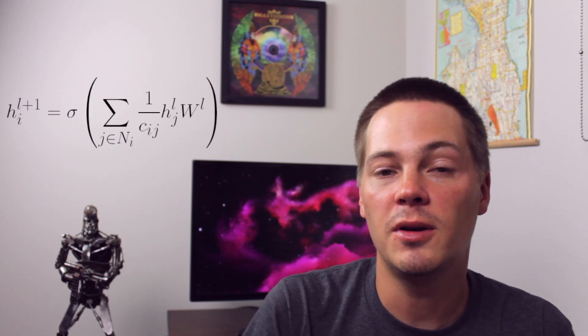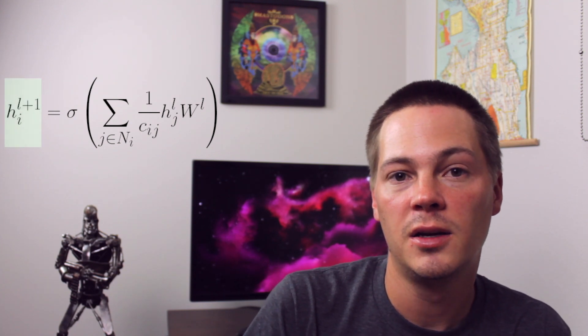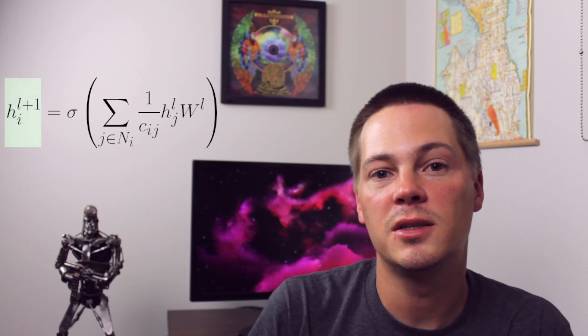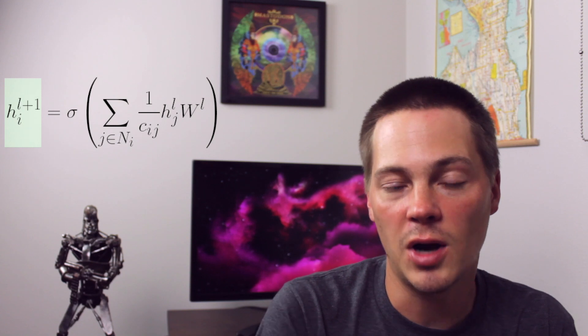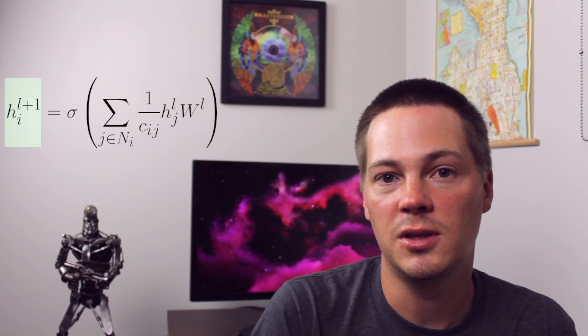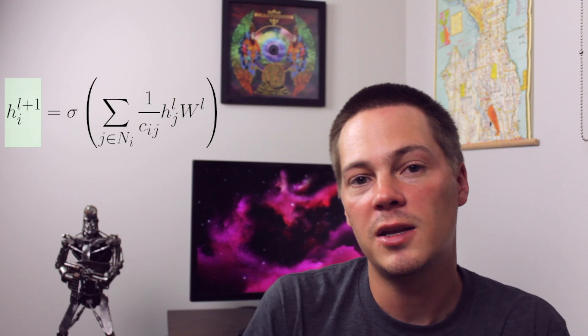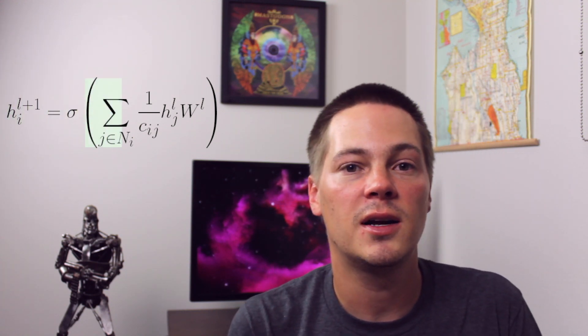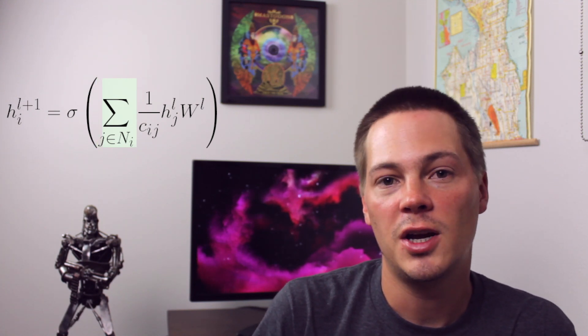And you see this if you look at the equation in the Kipf and Welling paper. And you'll notice on the left hand side there's H_i^(L+1). So H_i is the node embedding of node i. L+1 is just the layer that we're talking about.